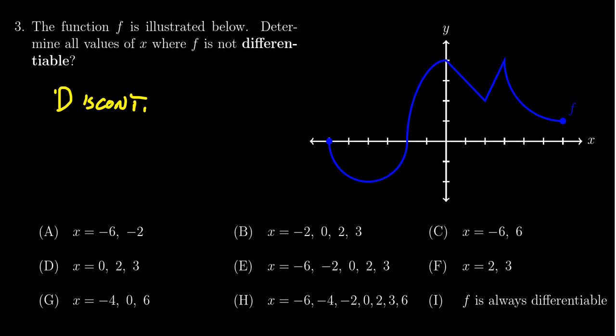We also are going to be looking for sharp corners. Notice our graph to the right doesn't have any discontinuities, but there are a couple corners—places where the direction suddenly changes.